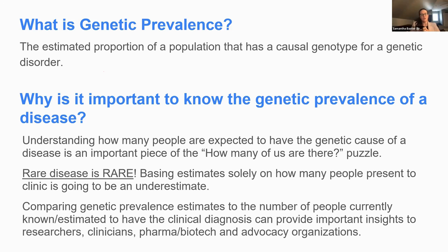Why is this important to know? Understanding how many people are expected to have the genetic cause of a disease is an important piece of the 'how many of us are there' puzzle that many patient advocacy and rare disease groups are facing. Rare disease is rare, as we know. Basing our estimates solely off of who presents to clinic and receives a diagnosis is going to be an underestimate.